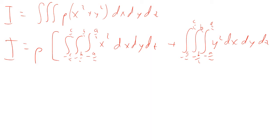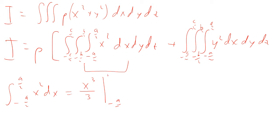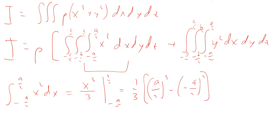For this part right here, we have the integral from minus a over 2 to a over 2 of x squared dx. That's not a hard integral. That's going to be x cubed over 3 evaluated from minus a over 2 to a over 2. So that's going to be one third times a over 2 cubed minus negative a over 2 cubed, which equals one third times a cubed over 8 plus a cubed over 8. So that comes out to be one twelfth a cubed.